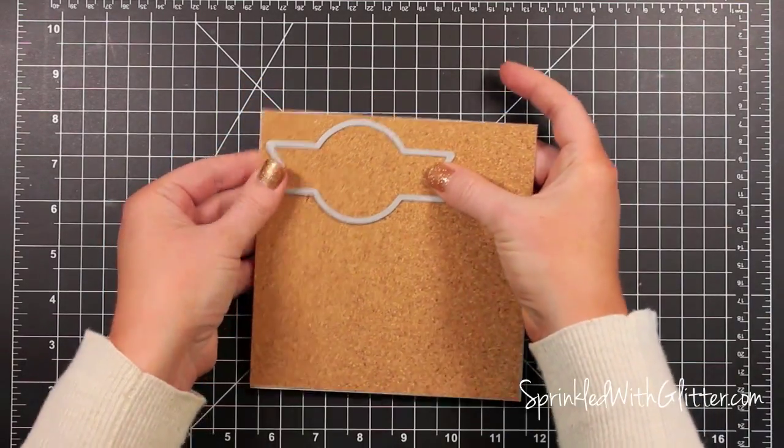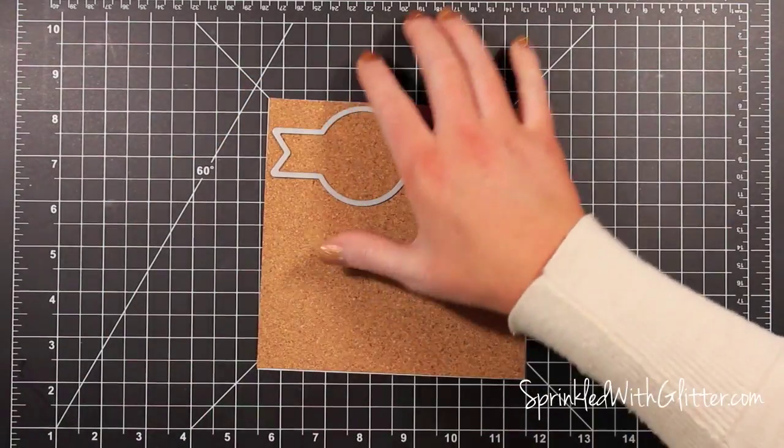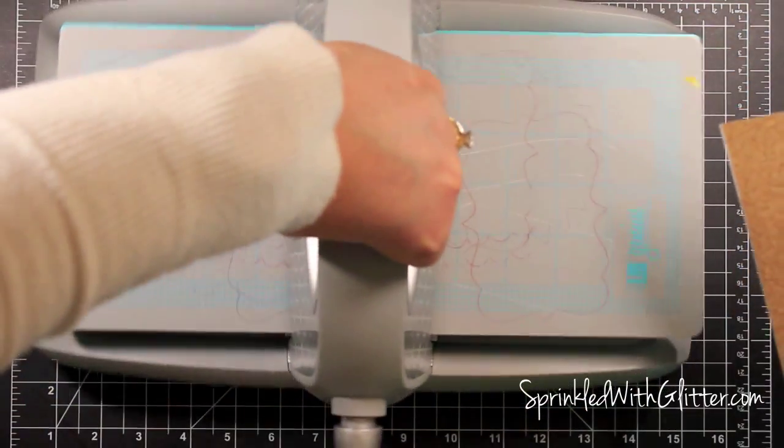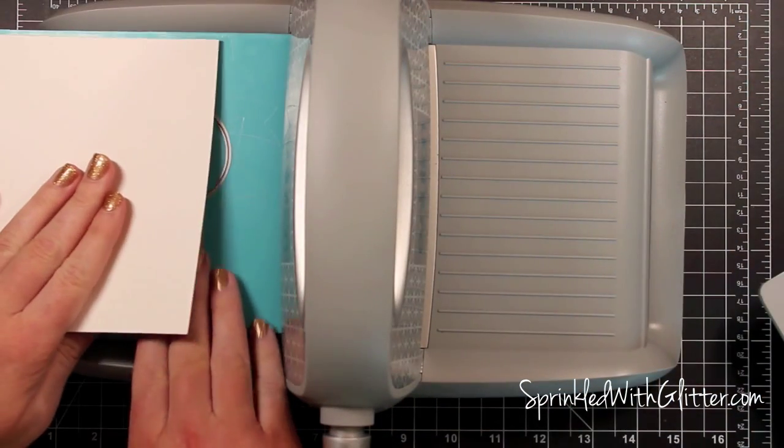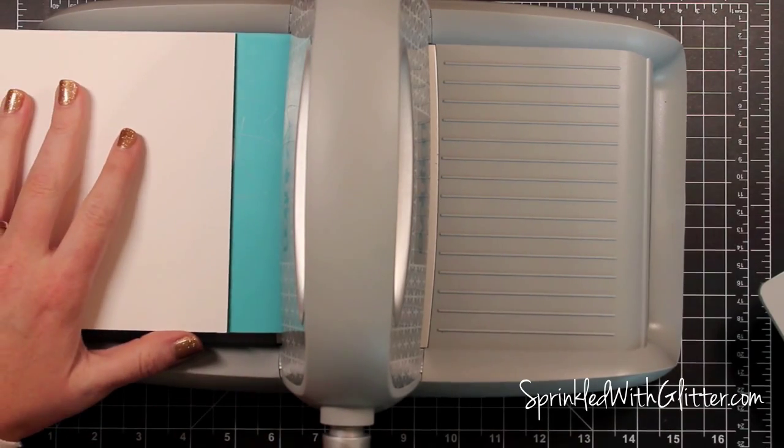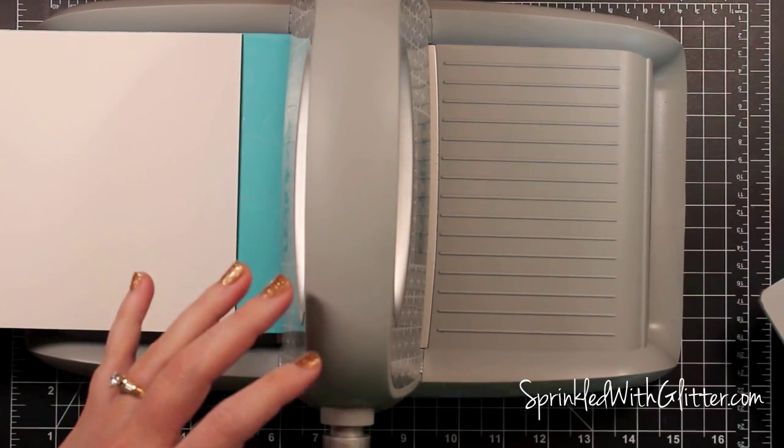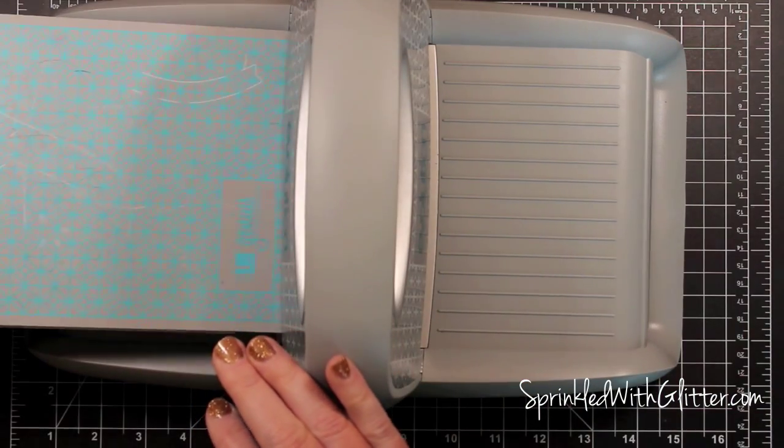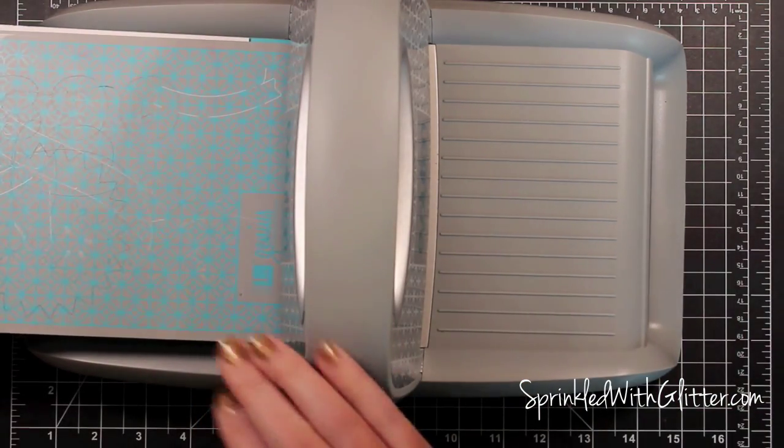It makes a big difference just putting that cardstock on the back. And now I have my die, this is from the Label It Kit. I'm going to put it on my Genius Platform blade side up, and I'm going to put my cork piece over the top of it, and then I'll put my A-plate on top of that and just crank it through my Evolution die cutting tool.